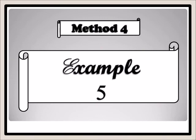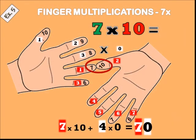Example five: seven times ten. Place the thumb and the ring finger together, then count down: one, two, three, four, five, six, seven — seven times ten is seventy. On the left hand there are three fingers, but on the right hand there are no fingers after the meeting point, so that is zero. Three times zero is zero. Seven times ten is seventy.